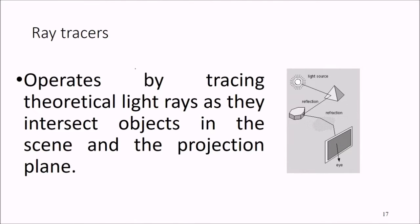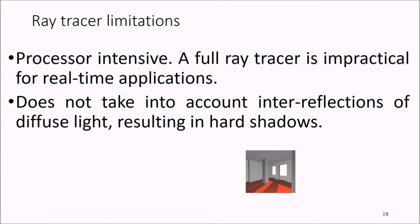Ray tracing operates by tracing theoretical light rays as they intersect objects in the scene and the projection plane. If this is a light source, light reflects from one face of the object, then to another object, with reflections, and finally reaches the eye. However, ray tracing has limitations: it is processor intensive, intractable for real-time applications, and does not account for inter-reflections of diffuse light, resulting in hard shadows.